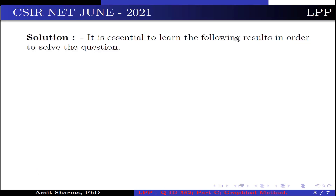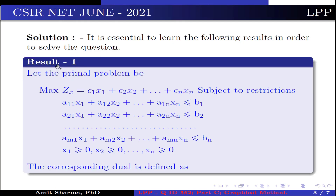It is essential to learn the following results in order to solve the question. Result number 1: let the primal problem be maximize z(x) = c1x1 + c2x2 + ... + cnxn, subjected to restrictions a11x1 + a12x2 + ... + a1nxn ≤ b1, a21x1 + ... + a2nxn ≤ b2, and so on up to am1x1 + ... + amnxn ≤ bm, where x1, x2, ..., xn ≥ 0.